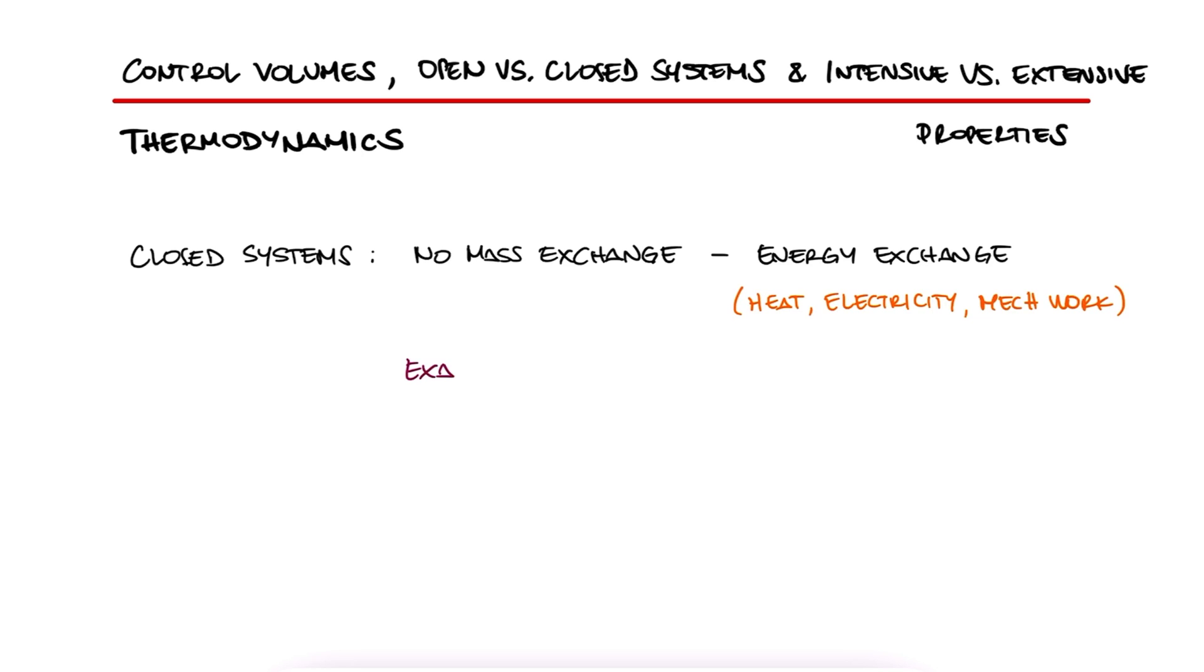The simplest example for these systems is a closed piston cylinder, which we used in a previous example, link below, where whatever substance we have inside the system is not leaving the system even though we can supply or obtain energy from the system.